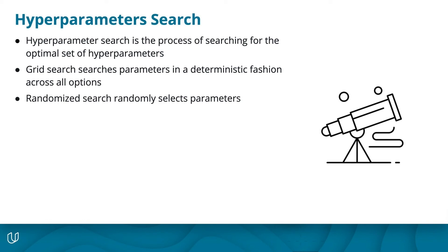Randomized search randomly selects a set of parameters each time to find an optimal set. This would be the same as randomly moving your telescope around and stopping it to search.